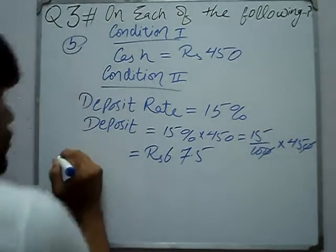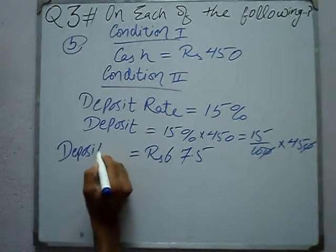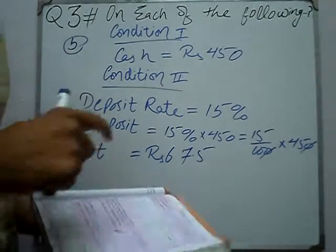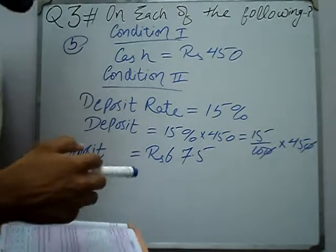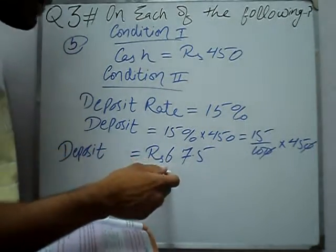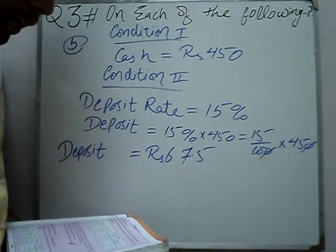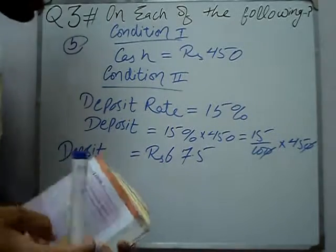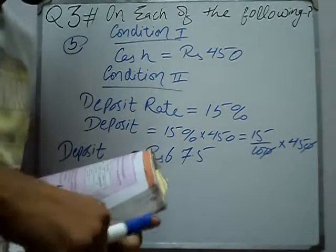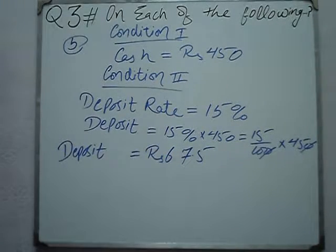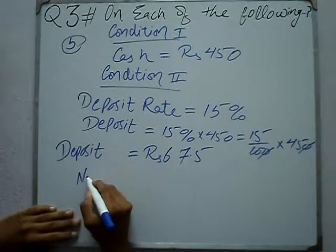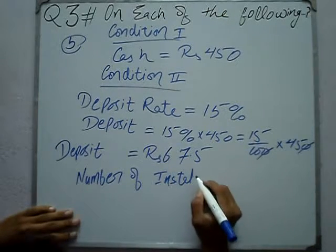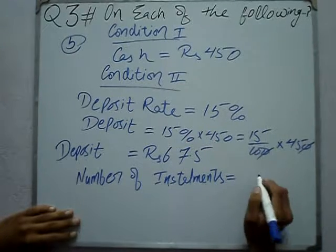So the deposit is 67.5. Now, how much is the cash payment? We need the number of installments and the monthly installments. The number of installments is eighteen.